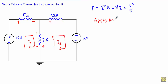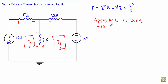Applying KVL to mesh 1: from this point to this point I encounter the 10V source with its negative terminal first and positive terminal later, so its voltage is plus 10. For the 5 ohm resistor I encounter the positive terminal first, so its voltage is minus 5I1.